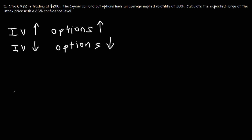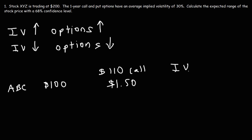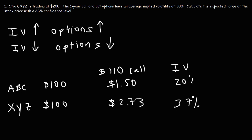For instance, let's say we have stock ABC trading at $100. The 110 call might be worth $1.50 given an implied volatility of 20%. Now, let's say we have another stock, XYZ, which is trading at the same price, $100, and its implied volatility is 37%. The 110 call is going to be more expensive — it could be $2.73, for instance. So when implied volatility is high, option prices are high; when implied volatility is low, option prices are low.